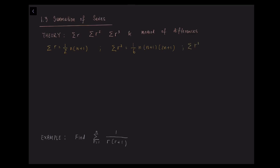For the sum of r squared — for example, 1 squared plus 2 squared plus 3 squared, etc. — it equals 1 over 6 times n times (n plus 1) times (2n plus 1). And for the summation of r cubed, it is 1 over 4 times n squared times (n plus 1) squared.